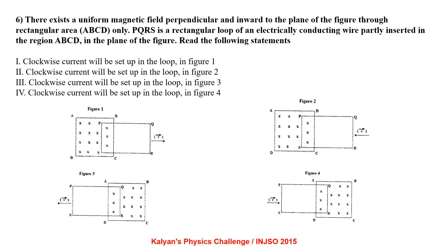There exists a uniform magnetic field perpendicular and inward to the plane of the figure through rectangular area ABCD only. PQRS is a rectangular conducting loop partly inserted in the region ABCD. We need to determine in which figures clockwise current is set up: figure 1, figure 2, figure 3, or figure 4.